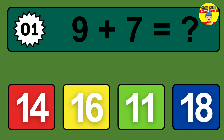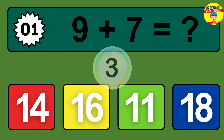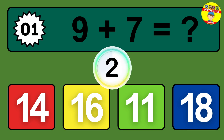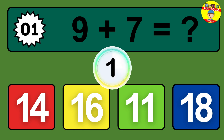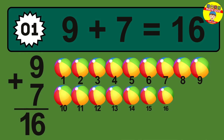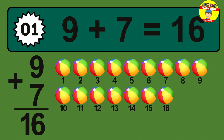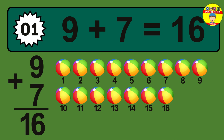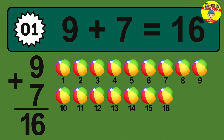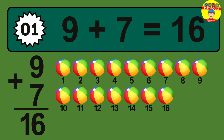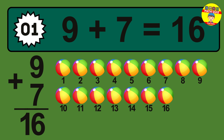Question 1. 9 plus 7 equals what? The answer is 9 plus 7 is 16. Let's count it: 1, 2, 3, 4, 5, 6, 7, 8, 9, 10, 11, 12, 13, 14, 15, 16.